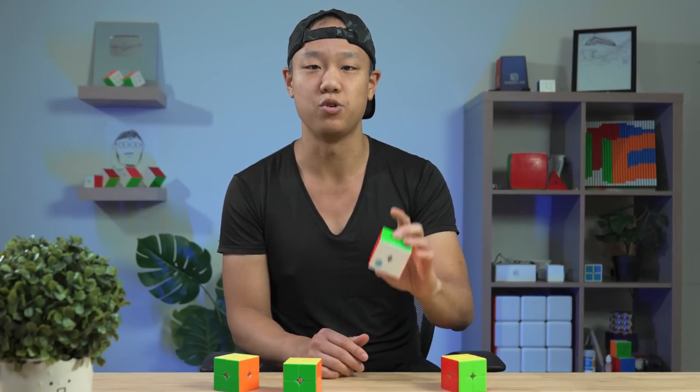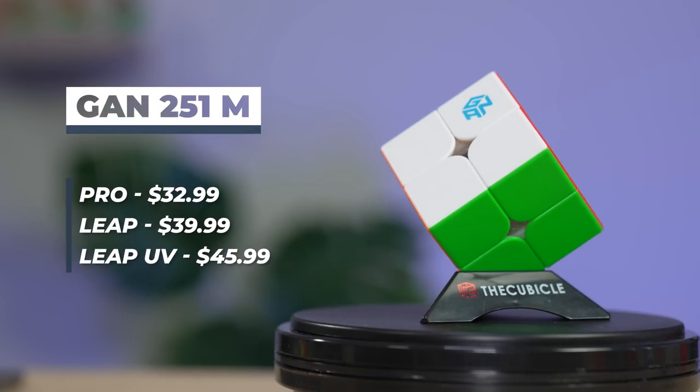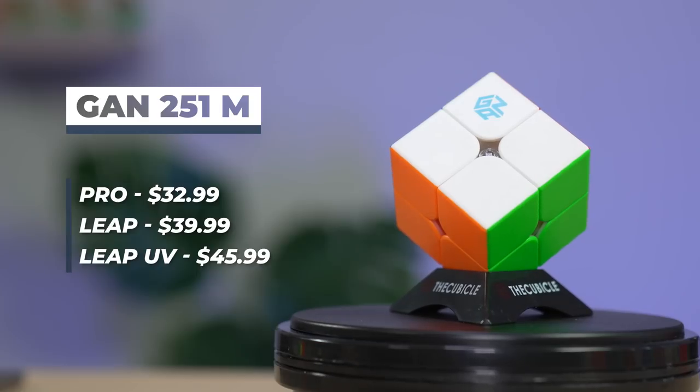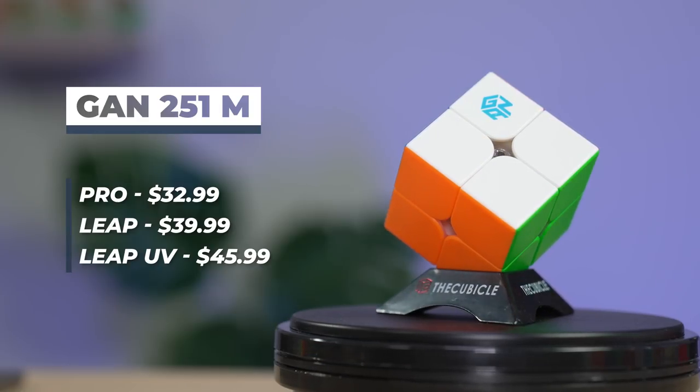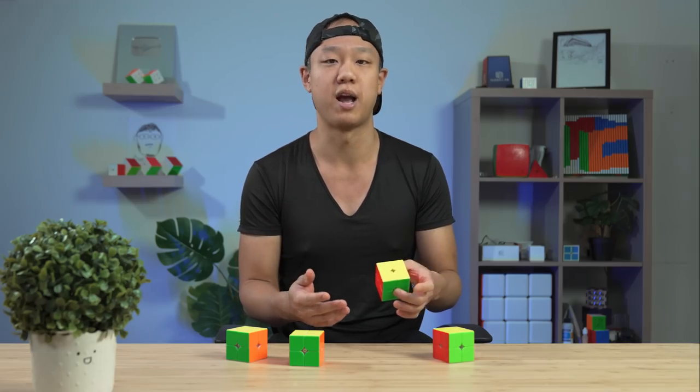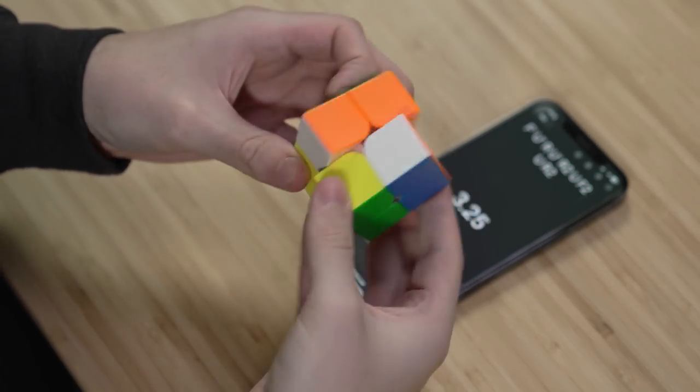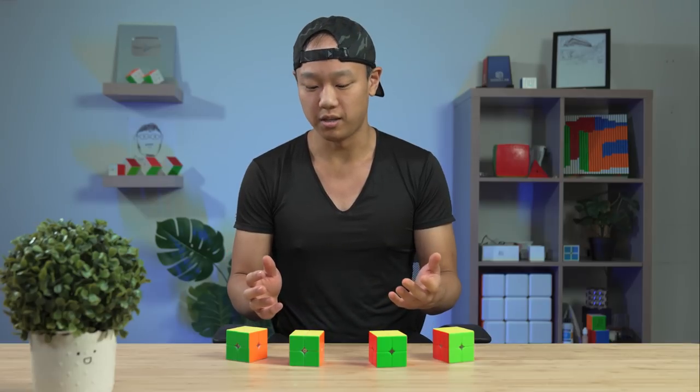The next one is the GAN 251M. We recommend at least the Pro or the Leap. This is the one with the core corner magnets, and this cube is very stable, and it's also a tad larger. So if you like a larger cube that's perhaps easier to hold, this is a really nice choice. And it also has that crispy GAN feel that is really pleasant to turn.